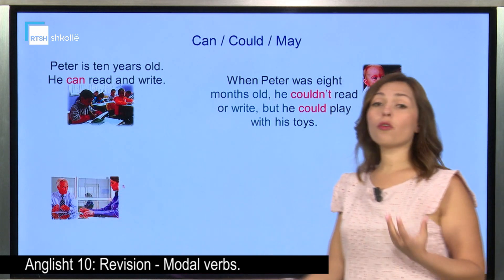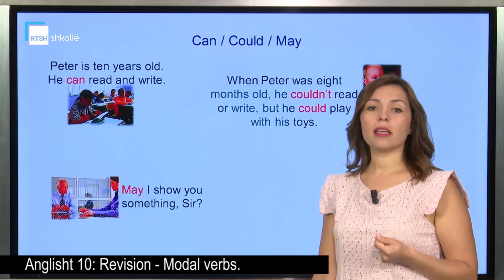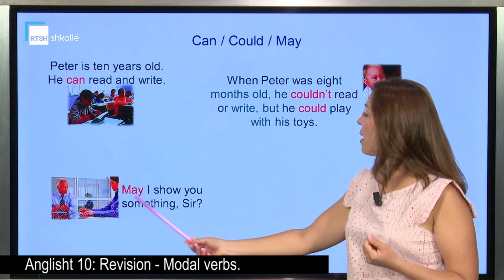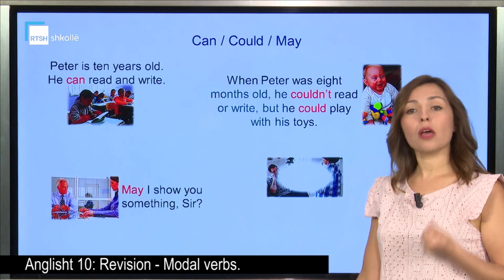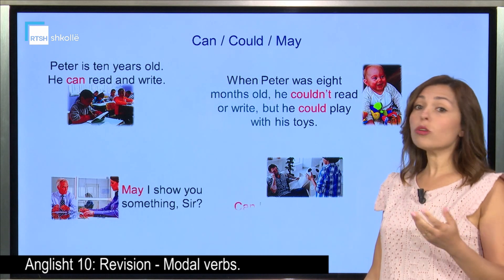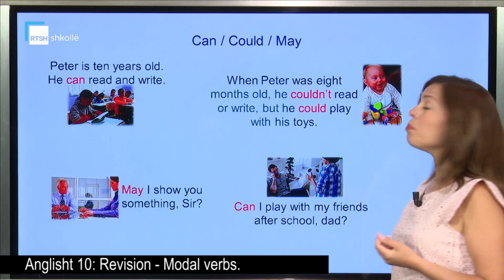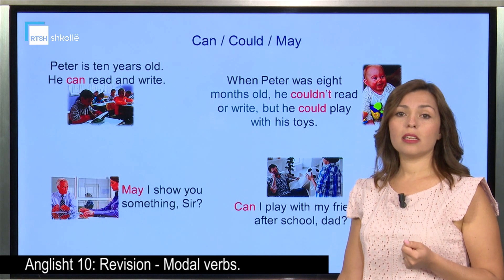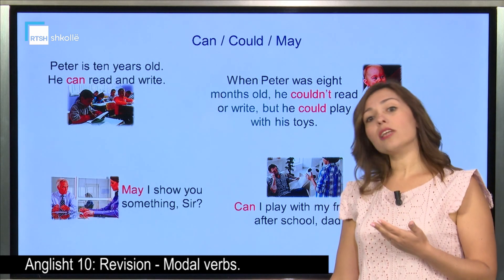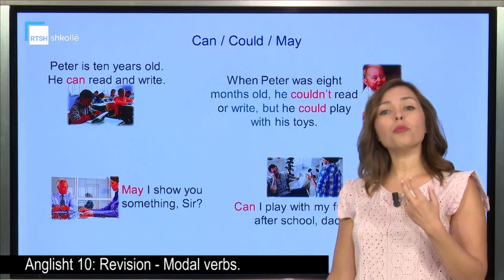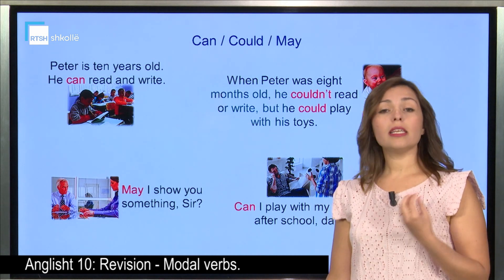When we're talking about a formal situation and we want to ask about something, we use the modal verb 'may' — and we want to be polite. 'May I show you something, sir?' So I'm asking for permission and I want to be polite. But when a boy wants to ask from his dad, he can use 'may' or he can simply use 'can': 'Can I play with my friends after school, dad?' The boy is asking for permission. Whereas 'may' is much more polite — it is formal.